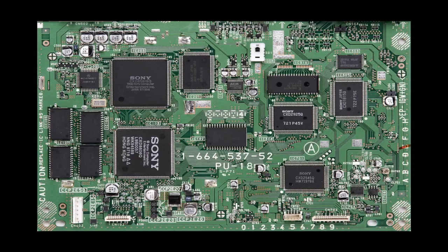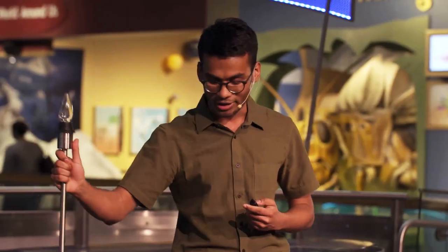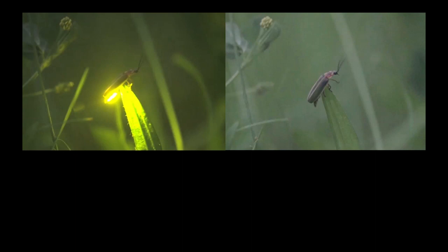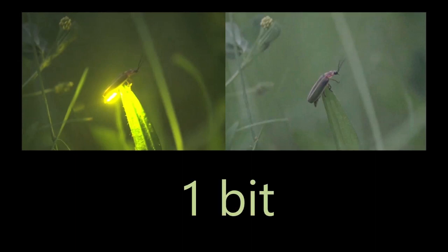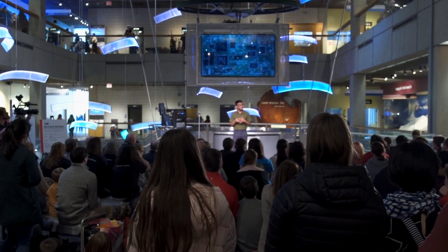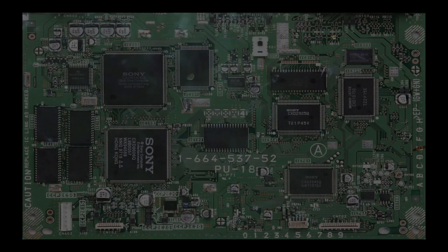A computer chip is a very complicated object, but the building block for it is something we all know and understand really well — it's just a switch. The switch can either be on or off, like the firefly, so we say it holds one bit of information. Computer chips have billions of connected bits, and the algorithms, the apps and games that you run on them, take these switches through specific on-off patterns.